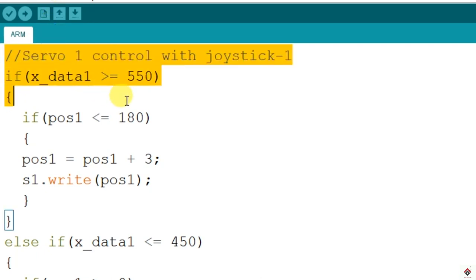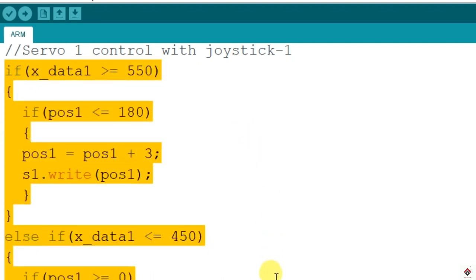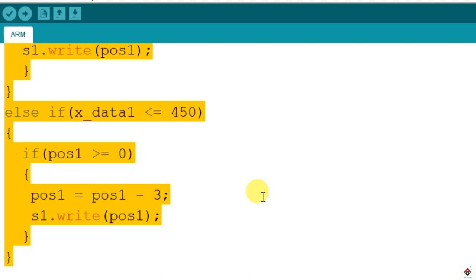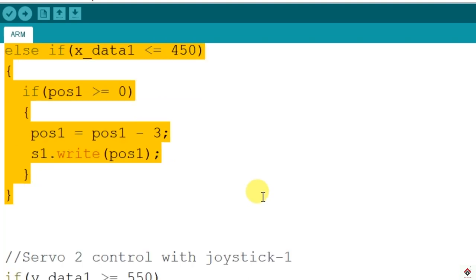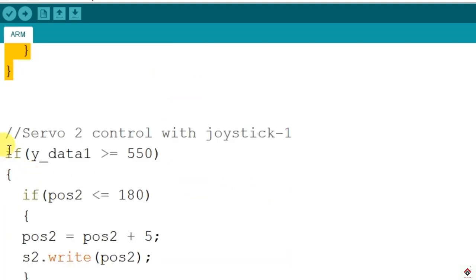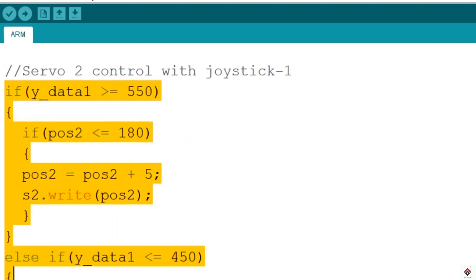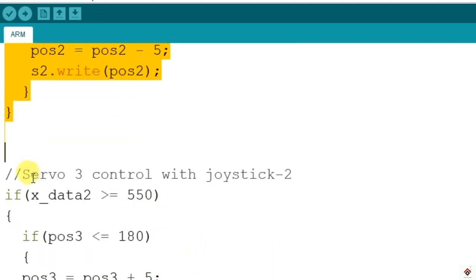So this is from where the actual logic starts for controlling servo motor and this explanation you can get it from the previous tutorial. So there we had only one if-else block for one servo motor. So similar logic I have copied for servo 2 and servo 3.